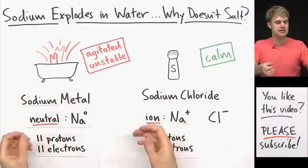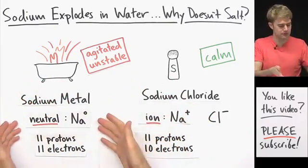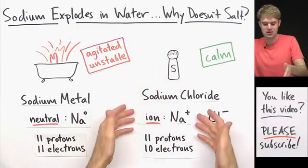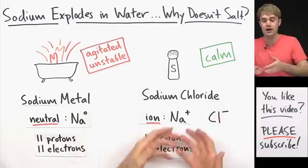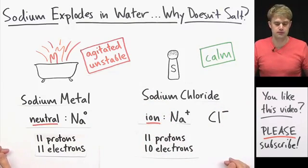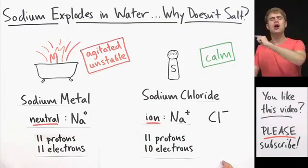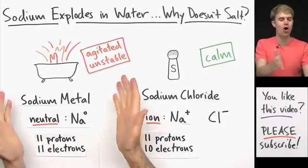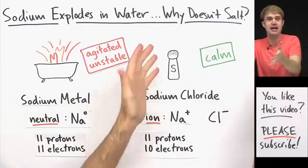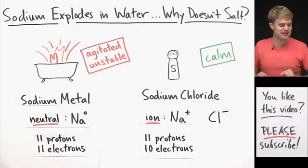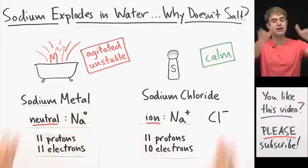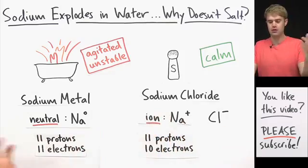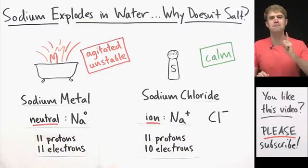So the big difference here is that the explosive sodium atoms have a neutral charge. Those are the kind in sodium metal. Whereas the relaxed sodium ions in sodium chloride don't react explosively. So that answers the question. But I have another one: Why is it that one electron makes all the difference between explosion and a tasty flavoring? Why is it that this neutral sodium atom reacts so explosively, but you take one electron away and this one doesn't react explosively at all?